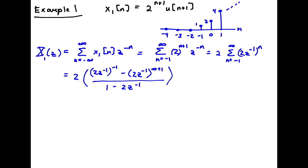What I'm essentially doing is applying the partial sum formula for a geometric series, where the partial sum goes from the first index to the last index plus 1, which goes to infinity plus 1. For this summation to converge, we want that term to go to 0. That happens only if the absolute value of 2z^(-1) is less than 1, or equivalently |z| greater than 2. So that gives us our ROC, and the divergent term goes to 0.